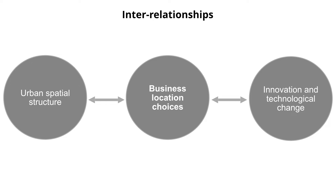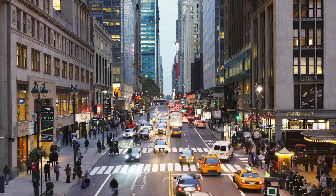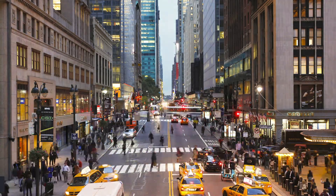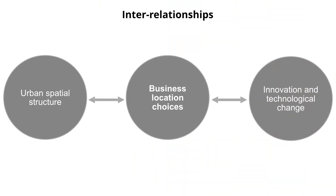Classical location theory is primarily focused on the relationship between how individual business location choices aggregate up to create urban spatial structure, and how urban spatial structure formulates the conditions in which individual businesses make their location choices. But all of these interrelationships are at play, and it is important to understand this very reciprocal and interrelated nature of these different ideas at the beginning of the course.